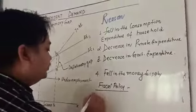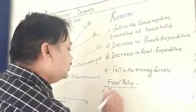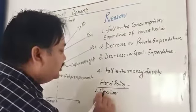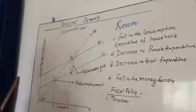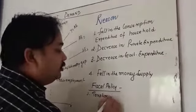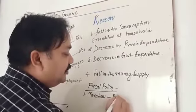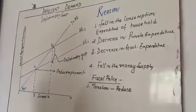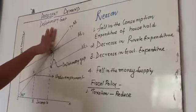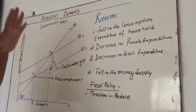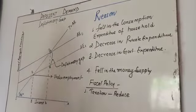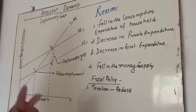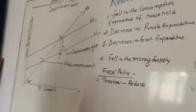The first fiscal policy measure is taxation. This time, tax is going to decrease. The government wants to reduce taxes so that consumption is going to be increased. Here the situation is excess supply, so government wants to increase consumption of goods and services by reducing both direct and indirect taxes.